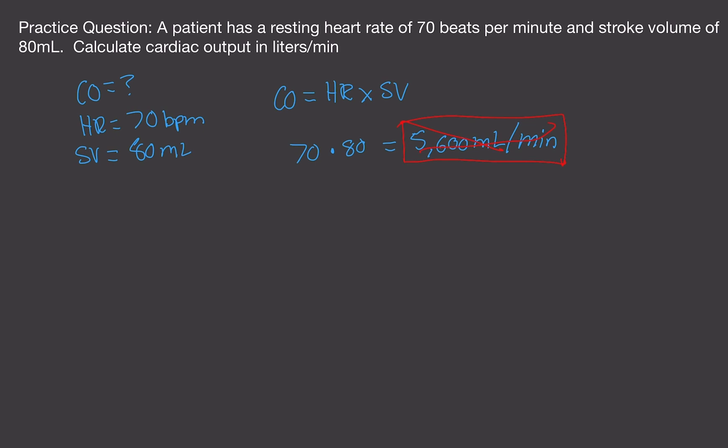There are 1,000 milliliters in 1 liter. So we divide by 1,000. Let's do that.